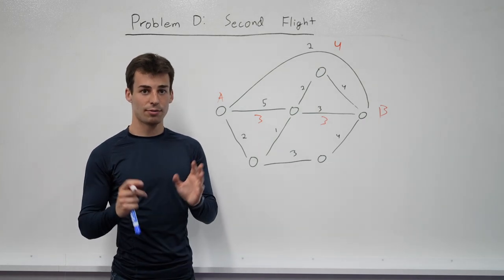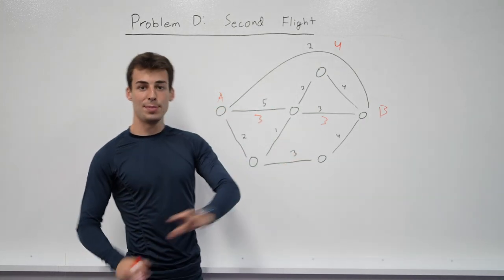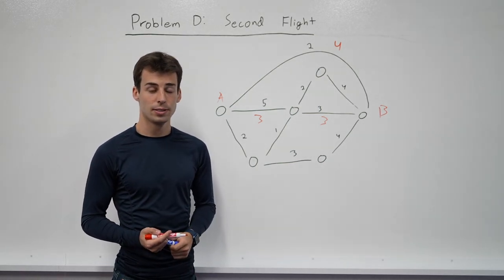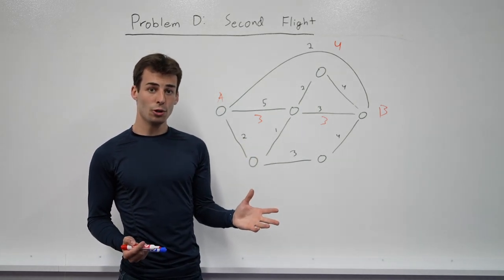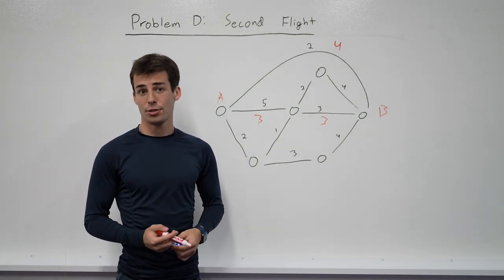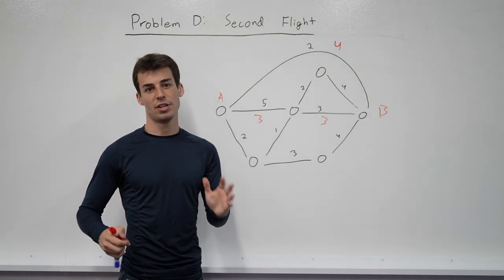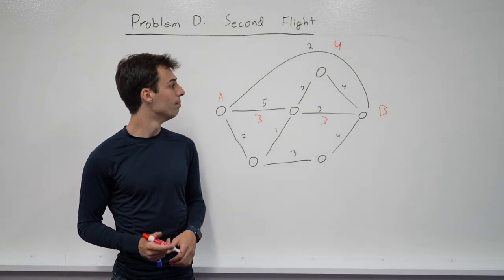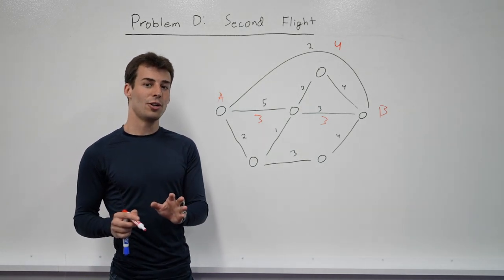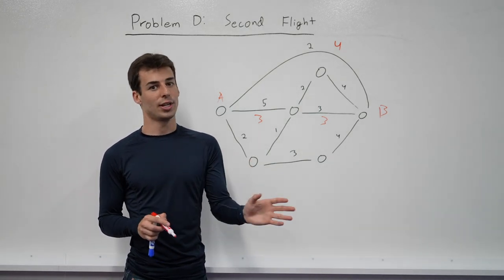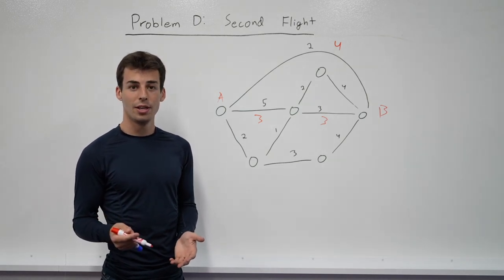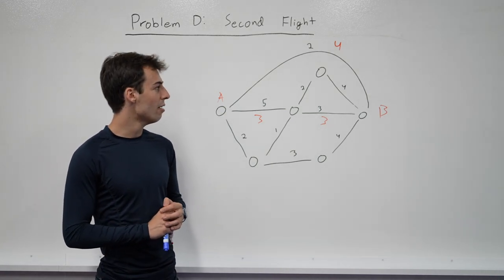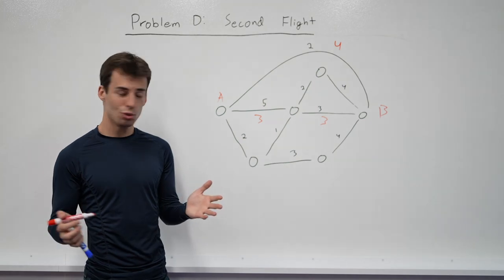Now, we're given a whole bunch of queries, several hundreds of thousands of queries, and these airports A and B can change between them. So we need to come up with some way of processing all of these queries in a relatively fast way. Because the graph can be rather large, and there can be a large number of edges, we're going to need something faster than n squared. We can assume that the number of nodes, edges, and queries are all roughly in the order of magnitude of several hundred thousand. In particular, we don't necessarily need a linear or n log n solution. We're okay with something that's n root n.